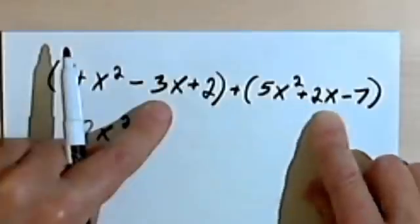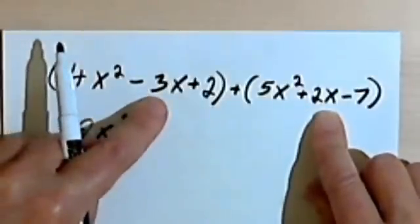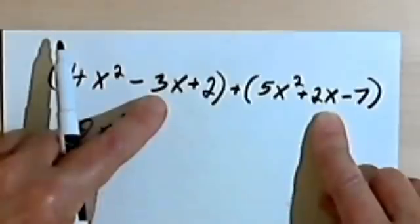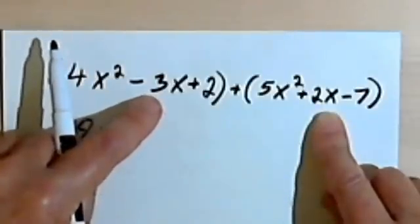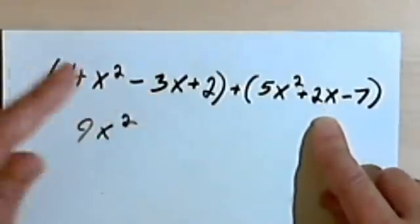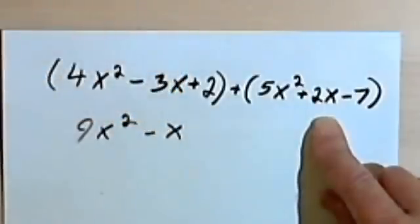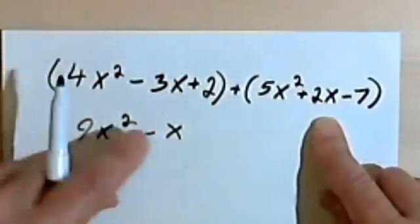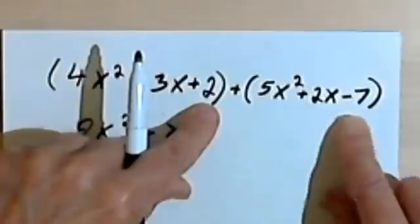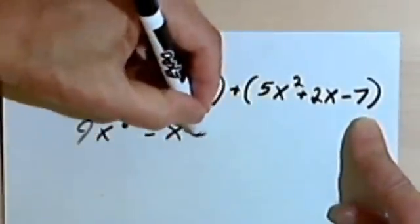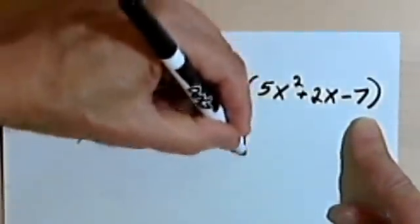Moving on to the x's, we've got a -3x and a positive 2x. Once again, we're just counting x's. So we've got negative 3 of them and positive 2. That means we've got negative 1. We can just write that as -x. And then we're combining positive 2 and negative 7. We're 2 - 7. That's just going to be -5.